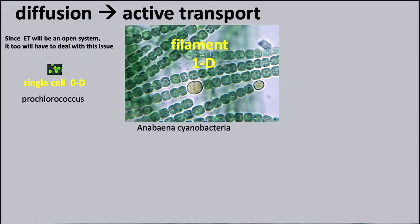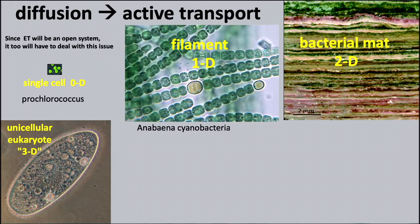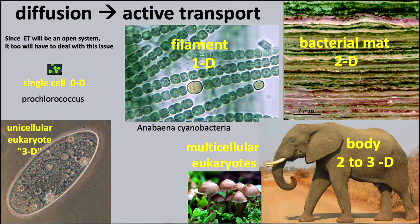Many bacteria produce bacterial mats — layers stacked on top of each other, like an ecosystem — forming a 2D structure. Two dimensions is very effective because it gives each cell access to the environment. Unicellular eukaryotes are much bigger than bacteria and therefore require a more sophisticated system of active transport and cytoskeletons, making them effectively 3D.